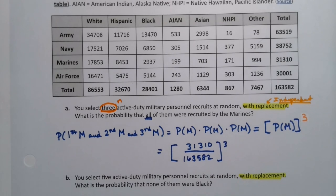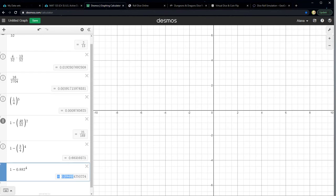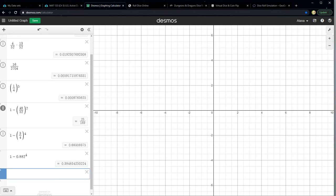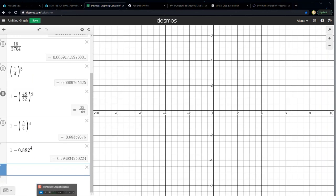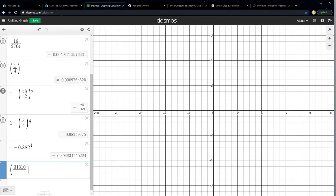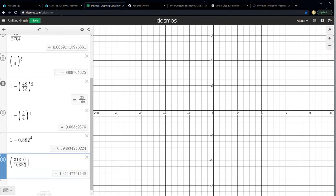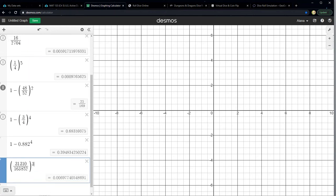Let me grab Desmos. I've got so many in here that I have to scroll down. So it just occurred to me, I could have shown this in projector mode. It makes the font a little bit larger. I apologize. So 31,310 divided by 163,852, and we want to raise that to the third power. And there you have it: 0.006977, which would actually round to 0.0070 if we were going with four decimal places.